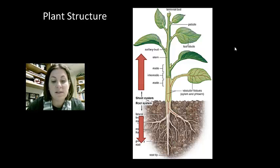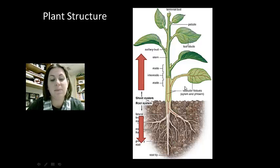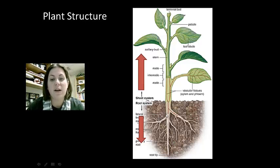The shoot system is composed of stems and leaves — we see here we have stems and we have the leaves. The root system of course is going to be composed of the roots.